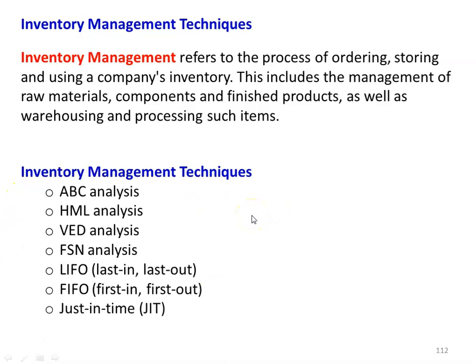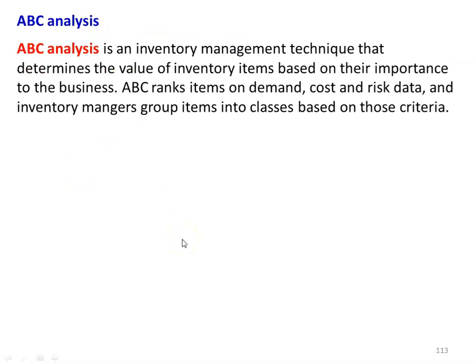There are different techniques available for inventory management. The very popular methods include ABC analysis, HML analysis, VED analysis, FSN analysis, LIFO (last in, last out), FIFO (first in, first out), and the latest popular technique — Just in Time (JIT). ABC analysis is the inventory management technique that determines the value of inventory items based on their importance to the business. ABC ranks items on demand, cost, and risk data, grouping them into categories A, B, or C.